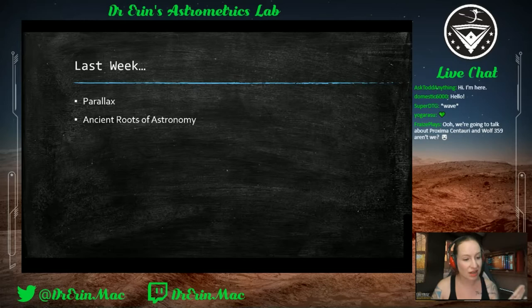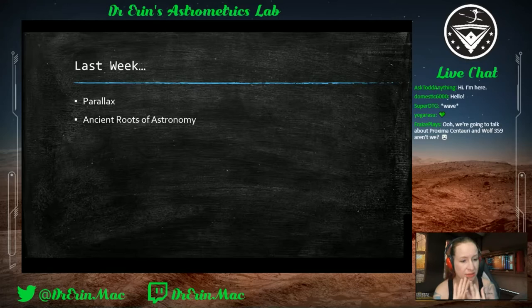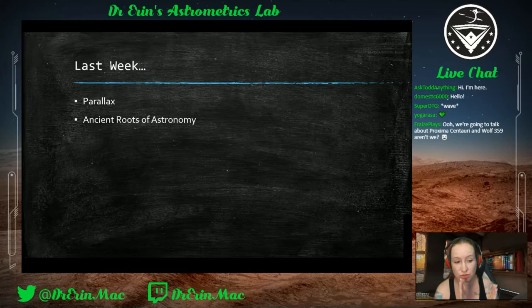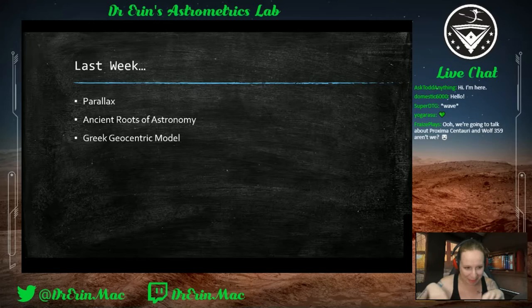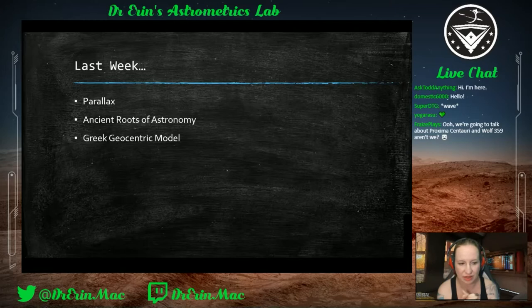We talked about the ancient roots of astronomy — how ancient cultures used astronomy for measuring seasons, days, rainy seasons, phases of the moon from month to month, solstice and equinox to mark points relevant for crops, and how long days would be. We also talked about the Greek geocentric Ptolemaic model, where the earth was at the center.